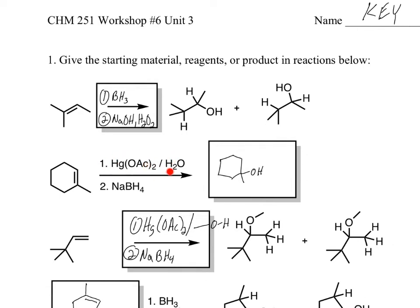This one's classic, oxymercuration, demercuration. Water's the solvent, so this is a way to add OH to the more substituted carbon, H to the less. Of course it's a trans addition, but you can't tell that here, but that's the product. Remember, sodium borohydride all it does is take off the mercury.